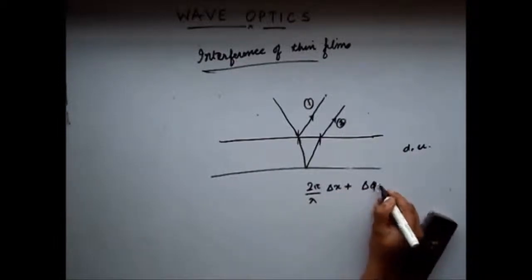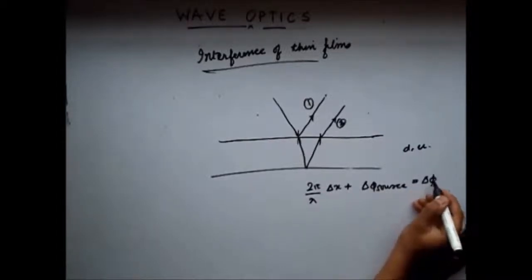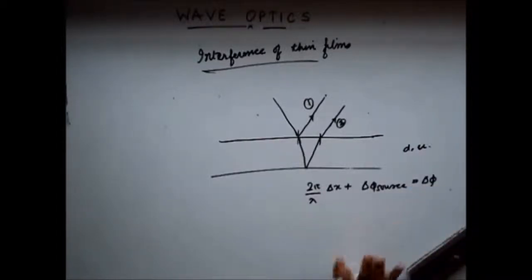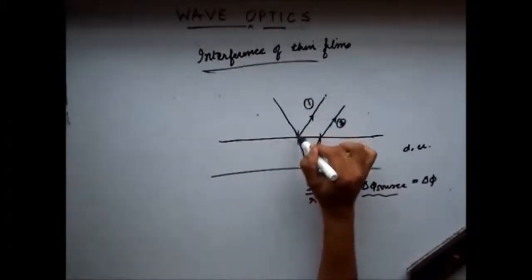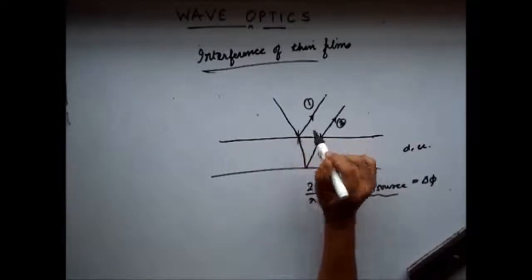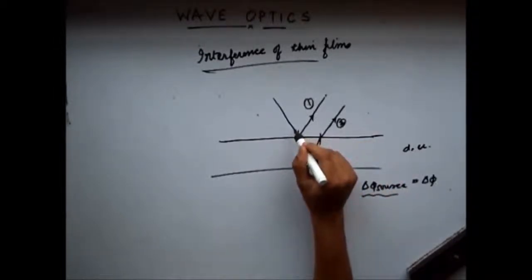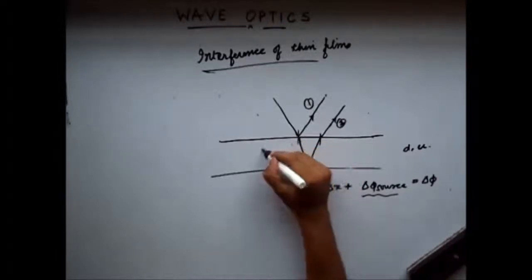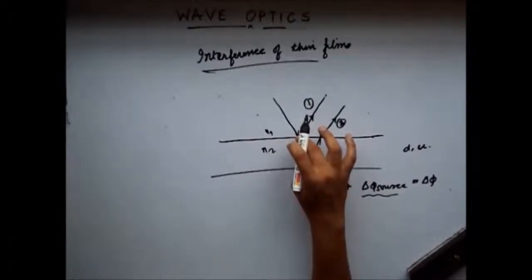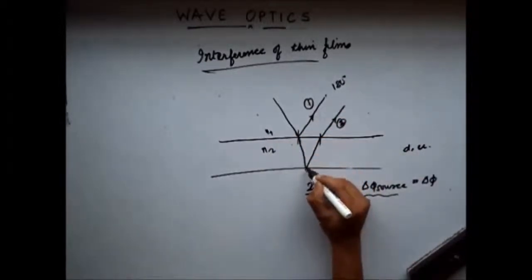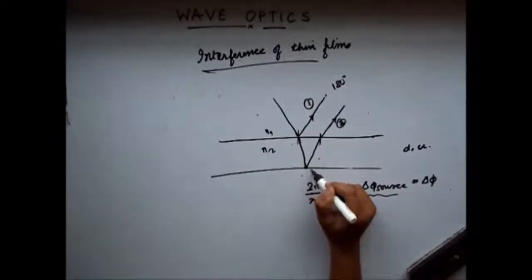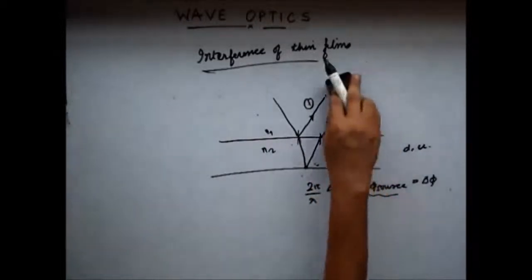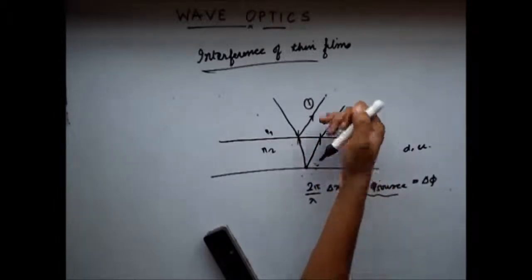Let's first see what is the phase difference between the sources. The first source undergoes a phase change of pi because the light wave was moving from rarer to denser medium and the reflection occurred there — so there is a phase change of 180 degrees. At the second surface, however, the light wave was moving from denser to rarer medium, so there is no phase change — phase change is zero. Therefore, the ultimate phase difference between the two sources is pi.